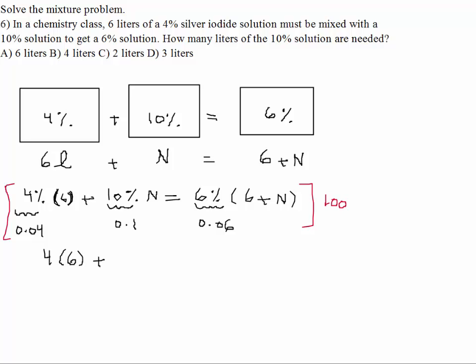And then here we have plus. I multiply .1 by 100, you get 10 times N. And multiply .06 by 100, I would get 6 times. Any question up to this point? How to set up the equation in a linear form so we don't have any decimal in there?